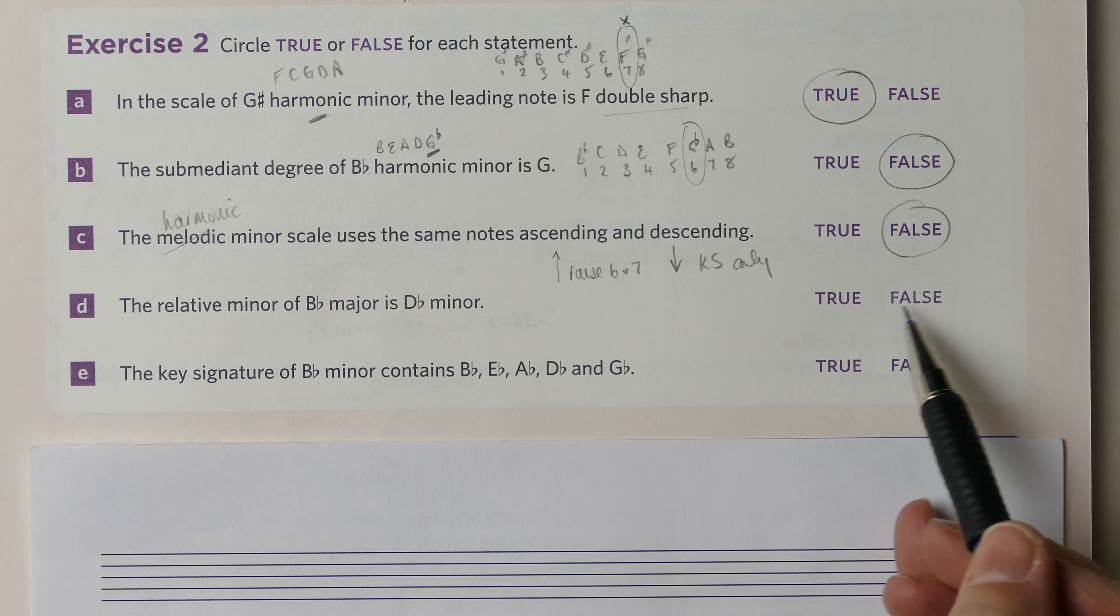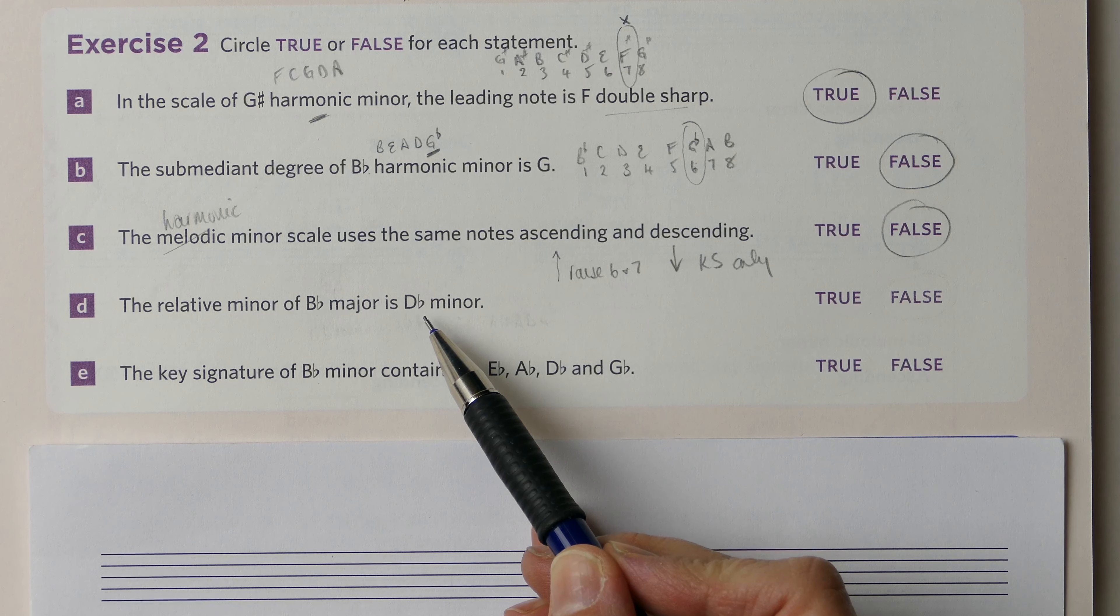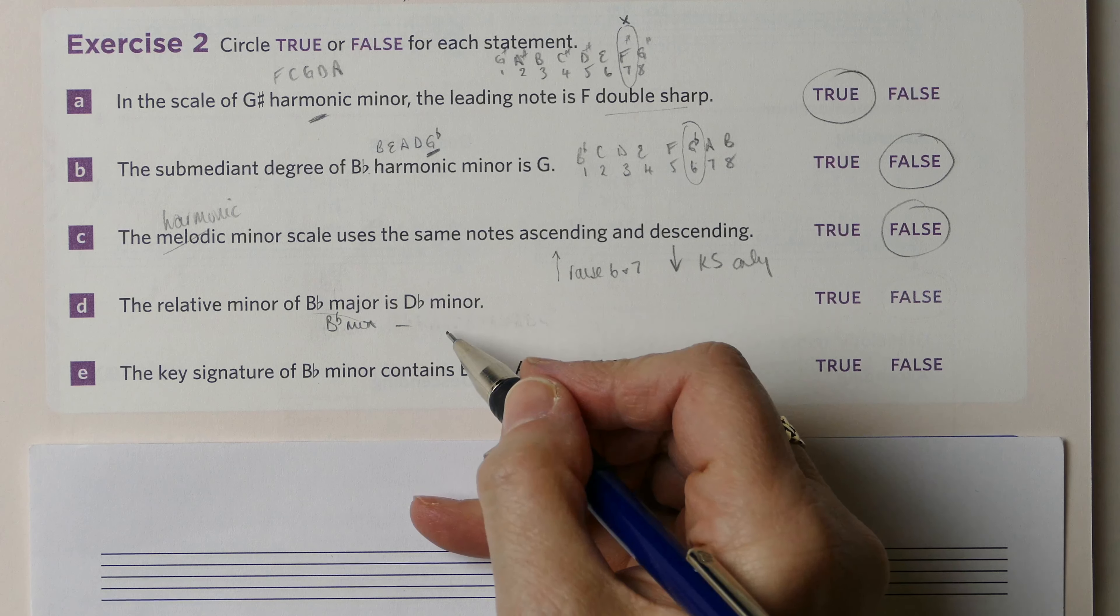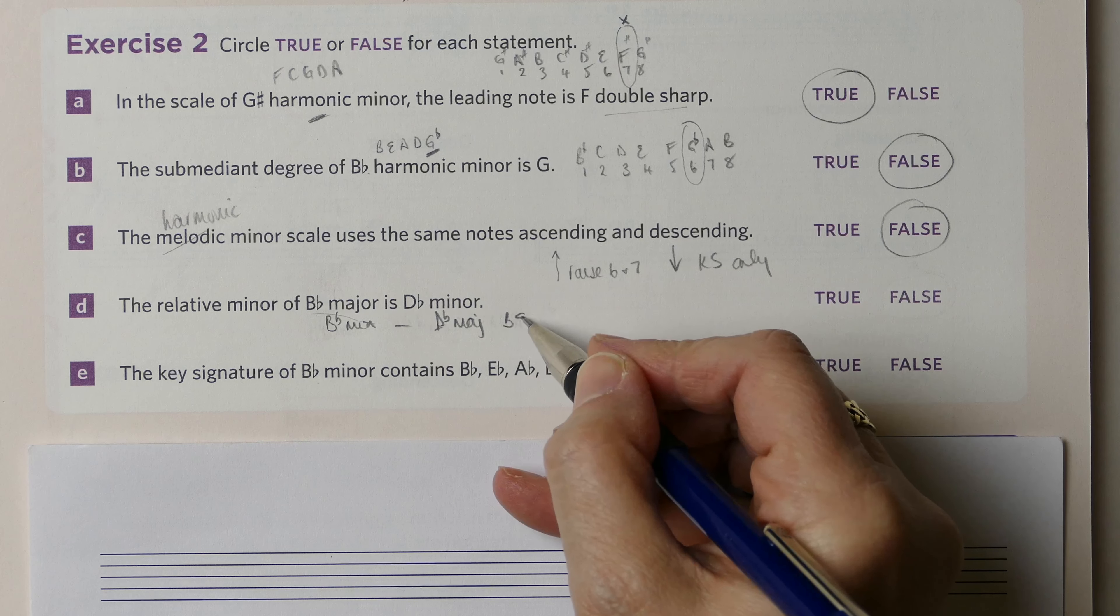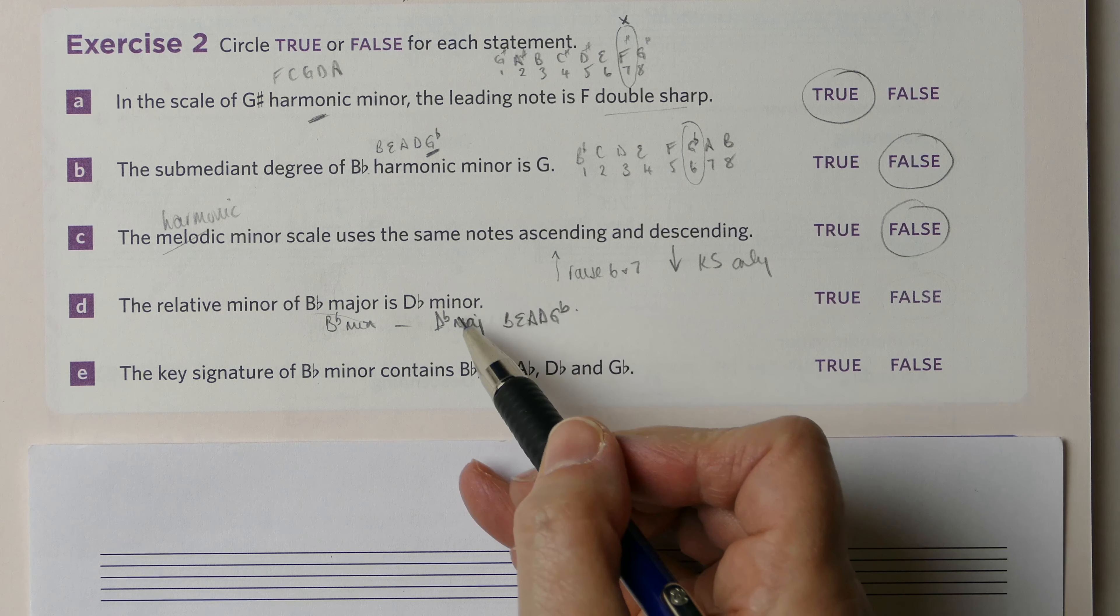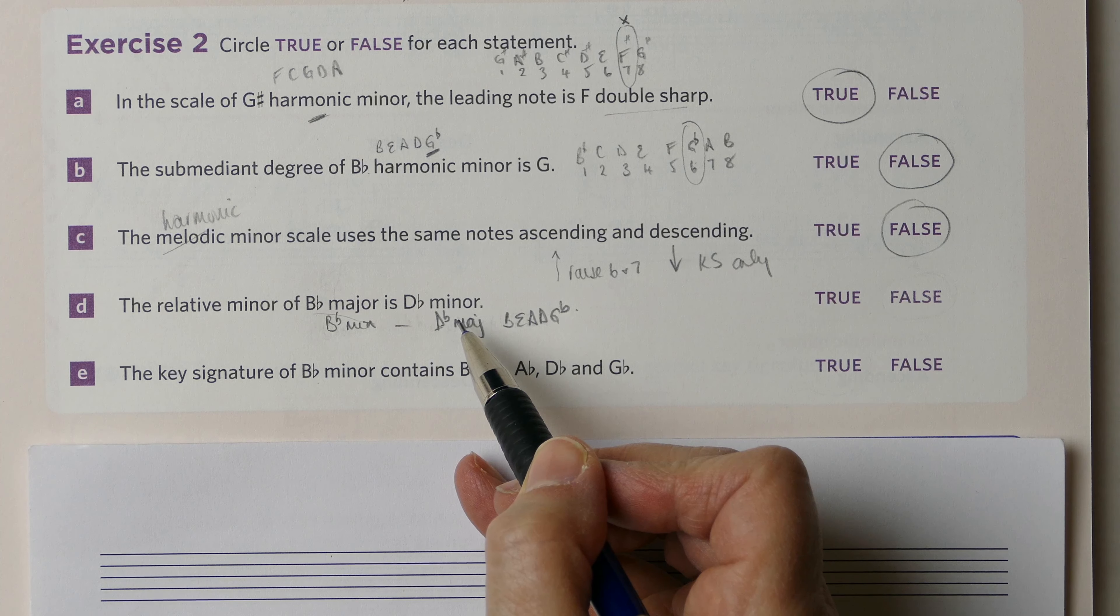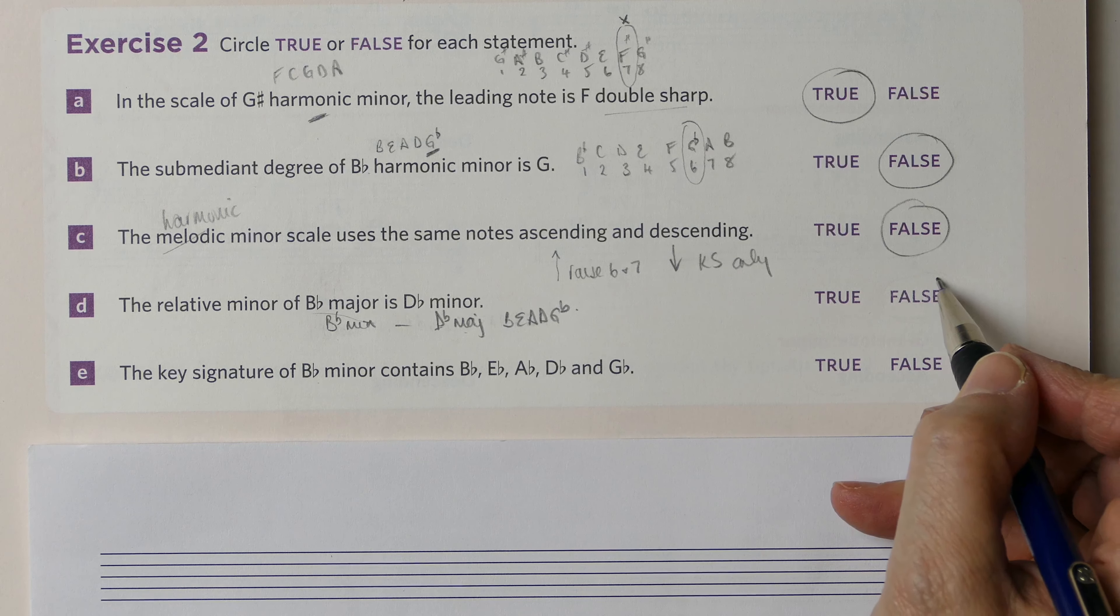Is it true or false that the relative minor of B-flat major is D-flat minor? Well, in actual fact, that's the wrong way round. It seems feasible, but B-flat minor is related to D-flat major, which has a key signature of B-flats, E-flats, A-flats, D-flats, and G-flats. But that's not at all the same. It's not the same the other way round. It's wrong that B-flat major is related to D-flat minor. It's B-flat minor is related to D-flat major, which is not at all the same thing. So that's false.